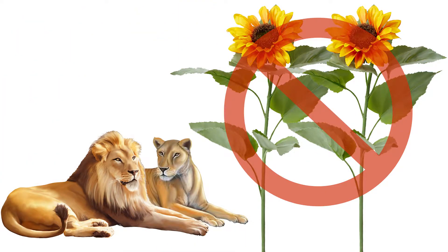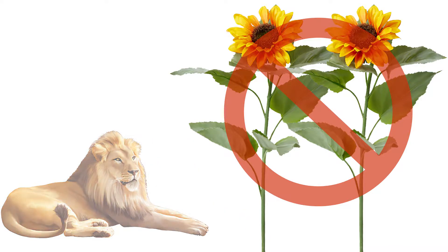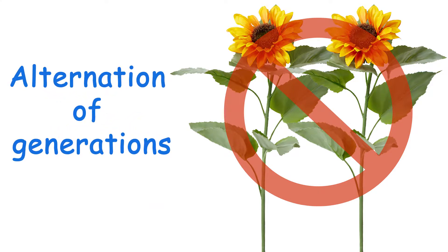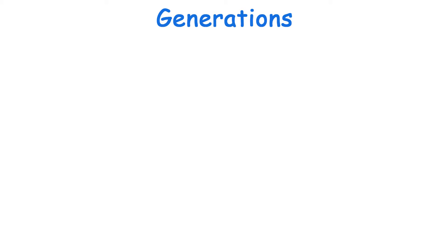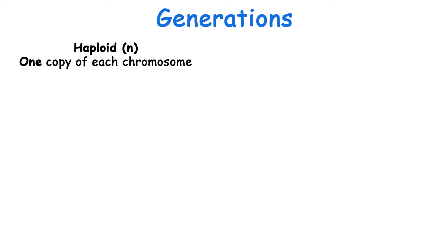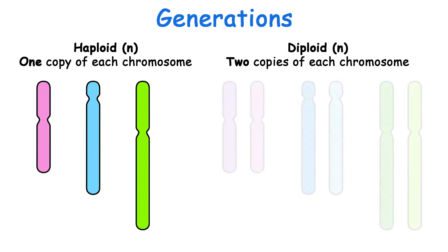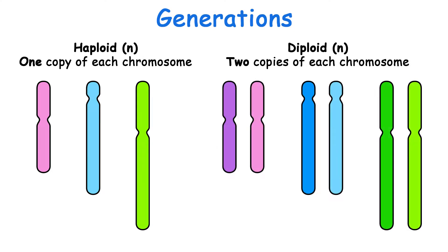To understand how autotrophs, such as plants, reproduce, we need to take a step back and familiarise with a concept called the alternation of generations. What are the generations we are talking about? One is the haploid generation and the other is the diploid generation. These two generations are distinct components of most plant and algae life cycles.